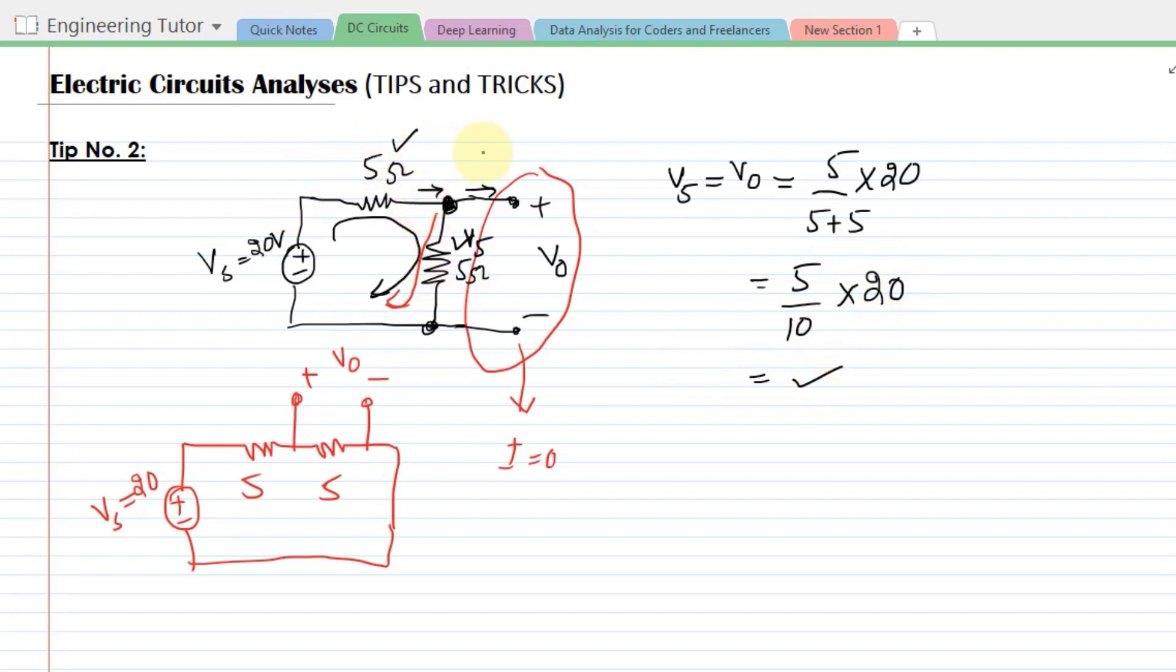So that is tip number two, in which we do not have to be confused with the circuit like this one. We have to see the loops where the voltage is being developed and the current which is not flowing through the other branches here. Thank you so much and I'll see you soon.